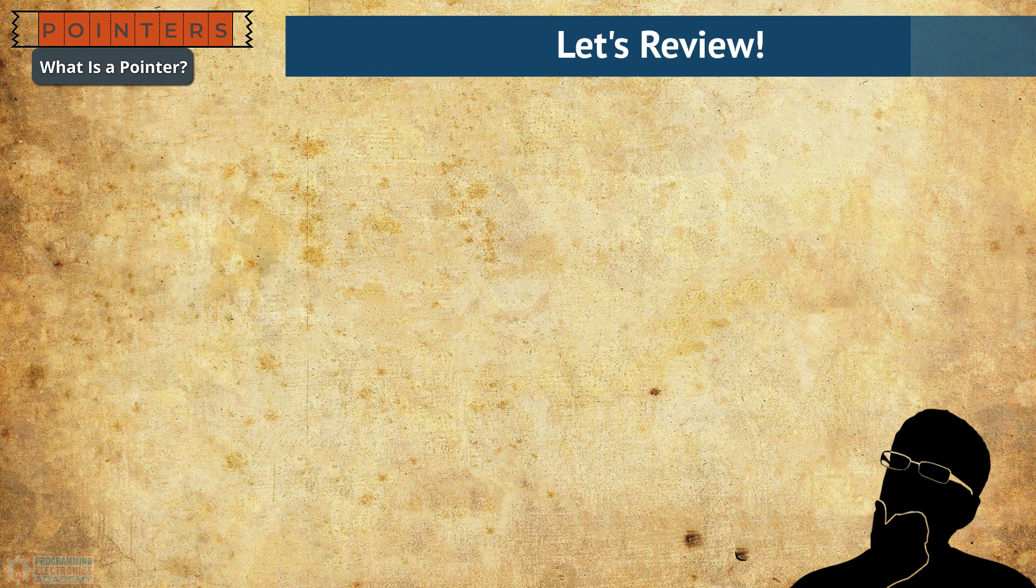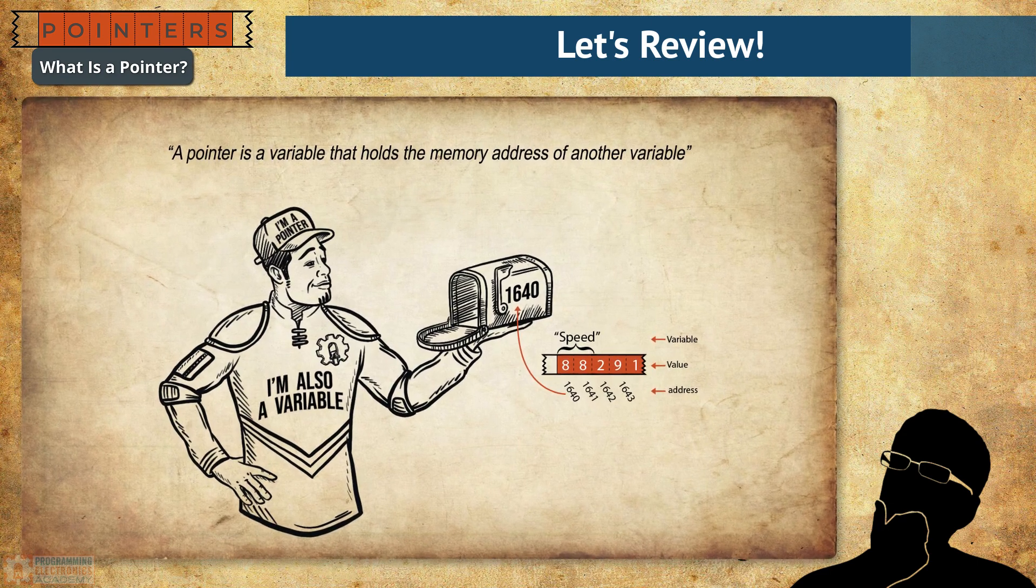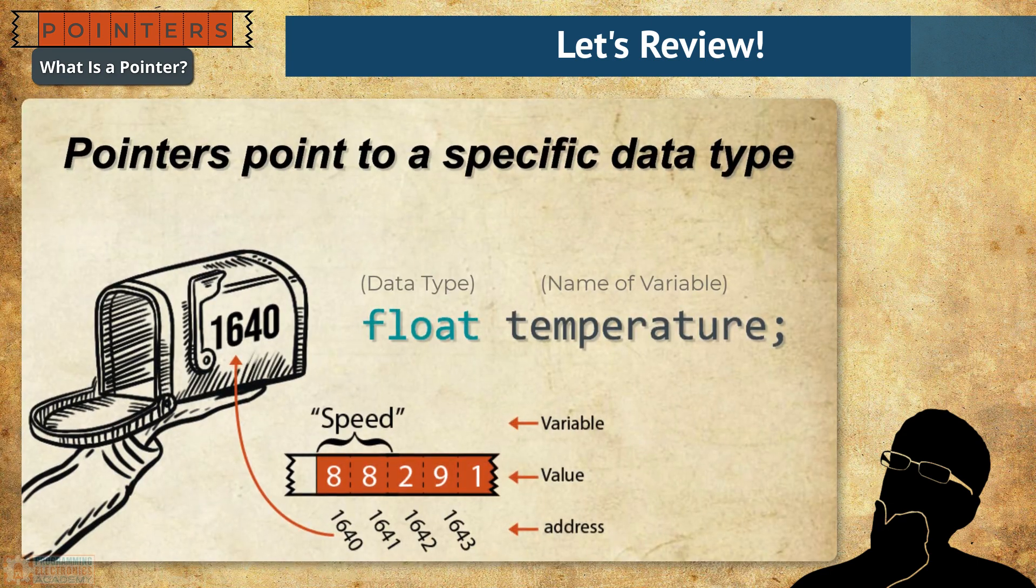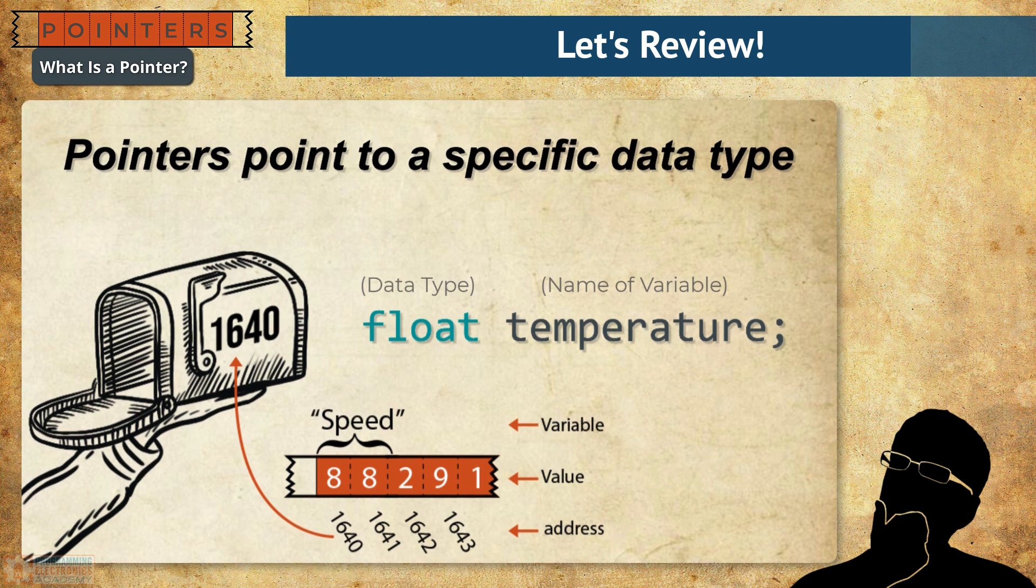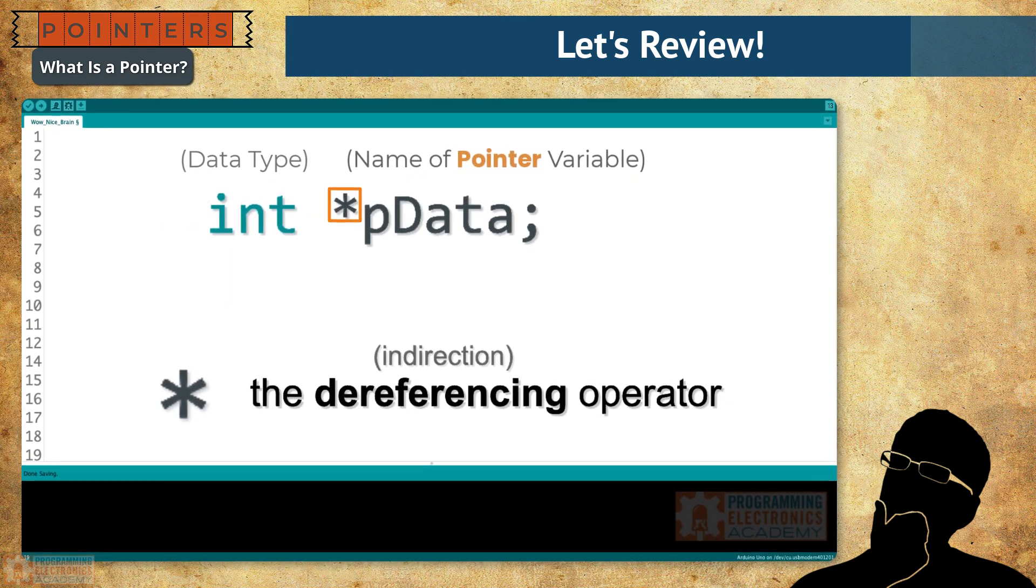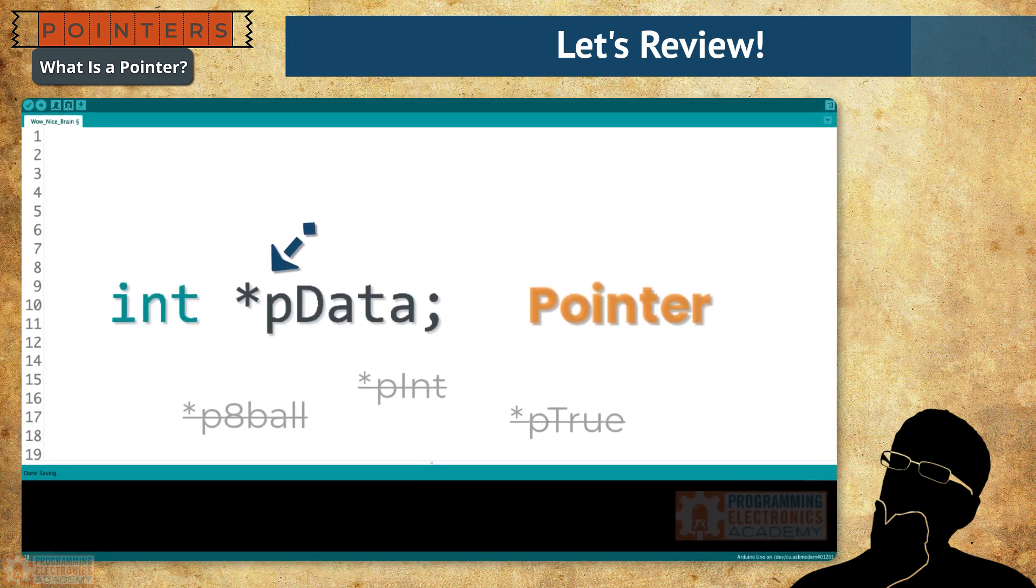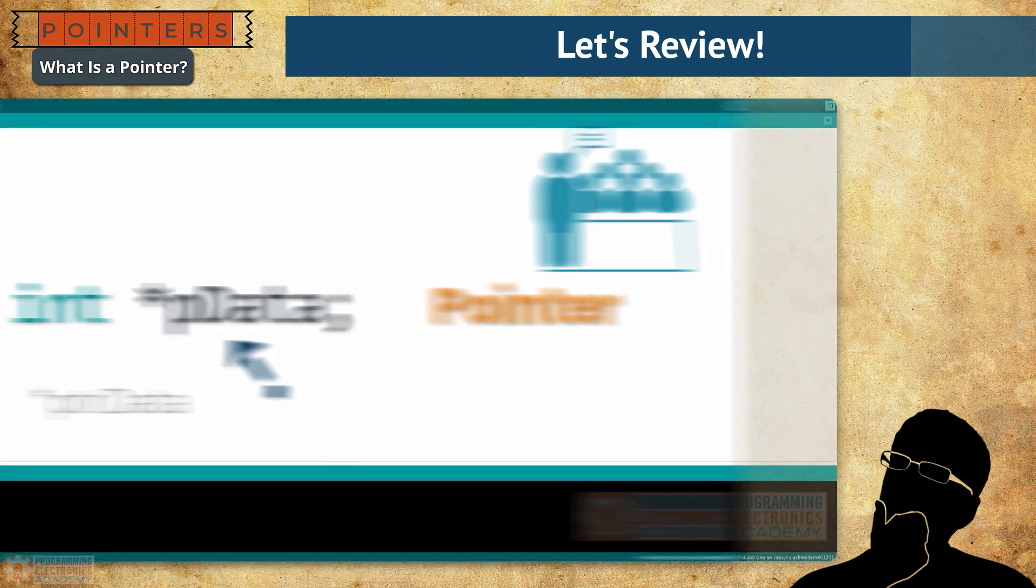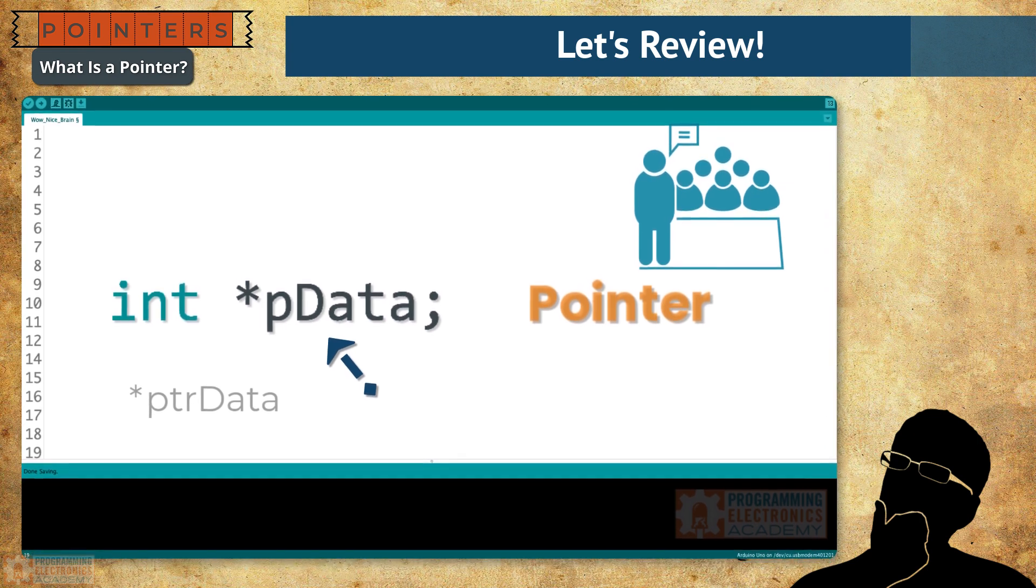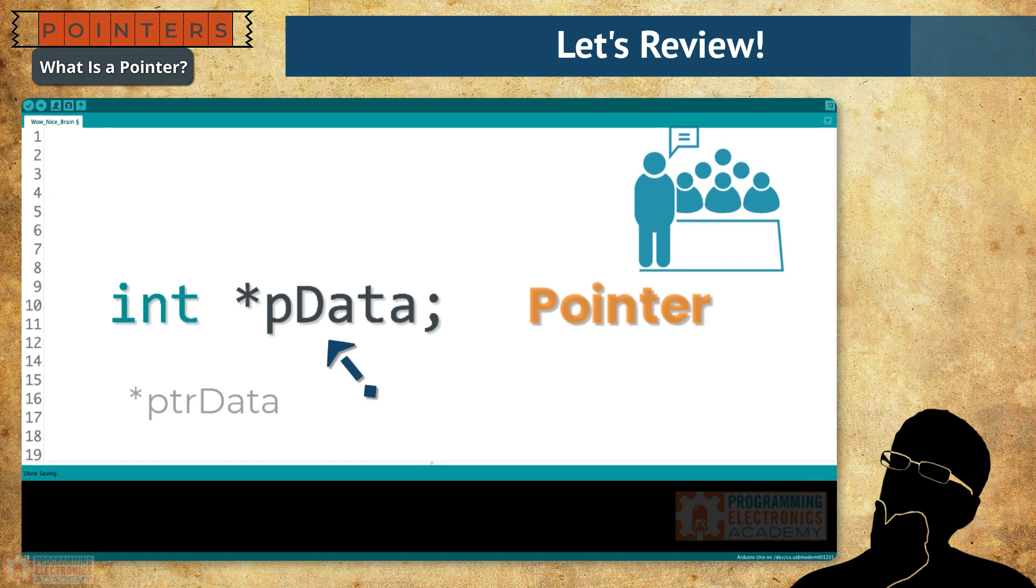All right, so let's review what we know about pointers so far. Pointers are variables. Every pointer must point to a specific data type. When declaring a pointer, you use an asterisk before the name. Pointer variables have the same naming restrictions as normal variables. By convention, pointer names start with a p, followed by the name of the variable they point to.